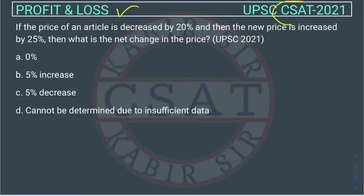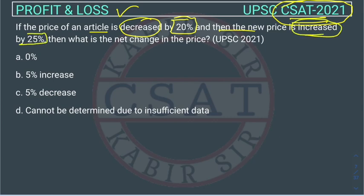This is a question of profit and loss asked in UPSC Civil Service Examination's CSAT paper 2021. The question is: if the price of an article decreased by 20%, then the new price is increased by 25%, then what is the net change in the price?